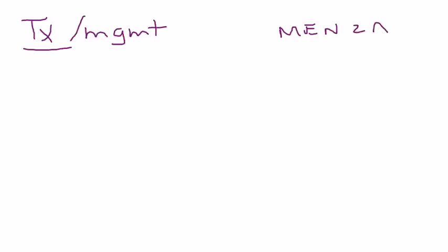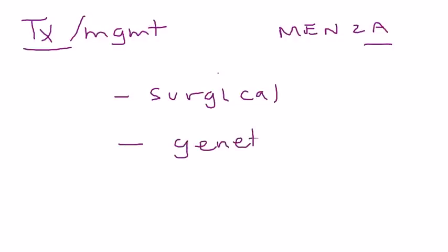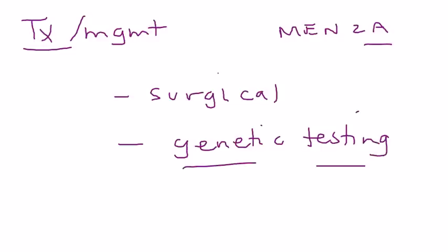Treatment and management of MEN2A is primarily surgical — these tumors must be excised. Genetic testing is also a key part of management because MEN2A is hereditary. All multiple endocrine neoplasias are hereditary, and genetic testing is very important for identifying a child with this syndrome early so that necessary treatments can be done before tumors become advanced.